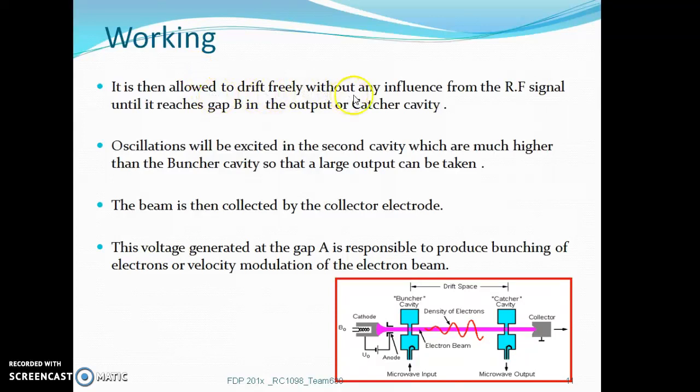The electron beam drifts freely without any influence from the RF signal until it reaches gap B in the output or catcher cavity. Oscillations will be excited in the catcher cavity, and the large output obtained is much higher than the buncher cavity. The beam is then finally collected by the collector.